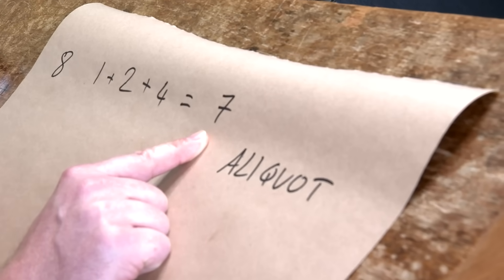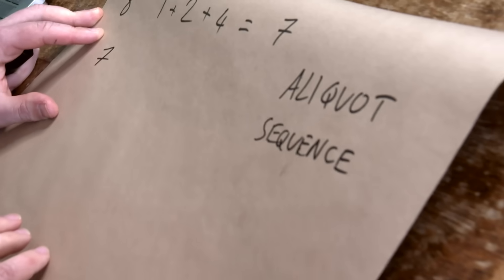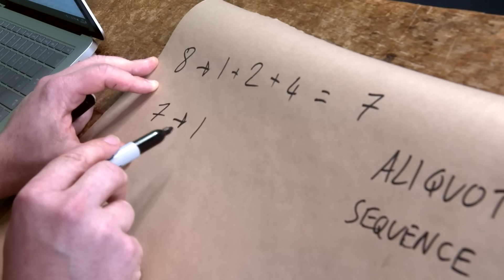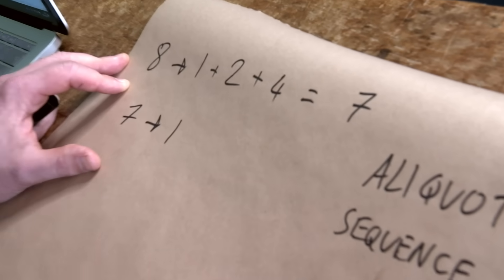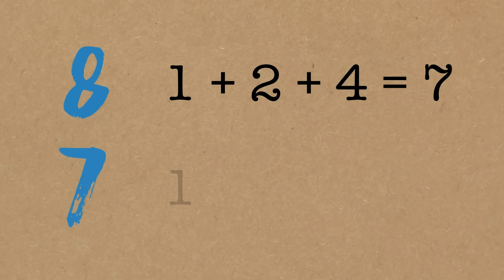You've got a number which is lower than we started with. But doing an aliquot sequence means doing it again. So you've got 7, go again. Tell me the proper factors. That's just got 1 because we're not doing 7 itself. So 8 went to 7, notice it went lower, and 7 went to 1. If we carried on, 1 has no proper factors, so you get 0. But we might as well stop there. Your number that you chose, 8, got lower, and that means we call 8 a deficient number.